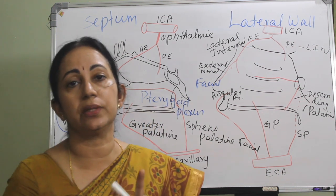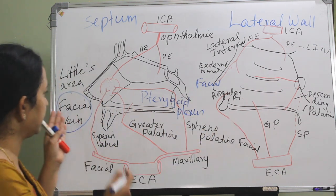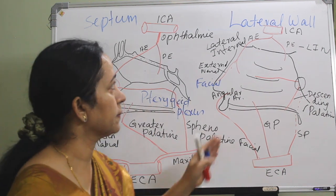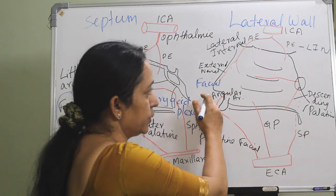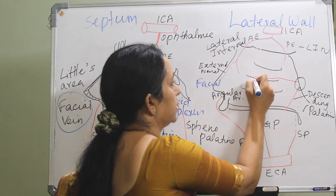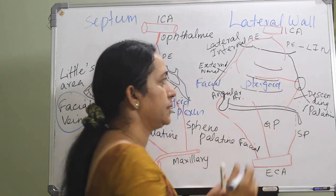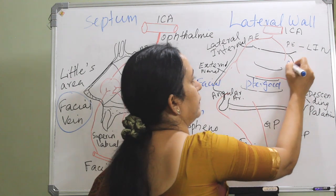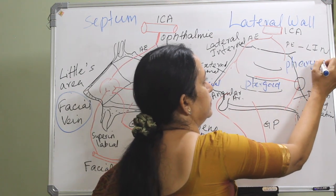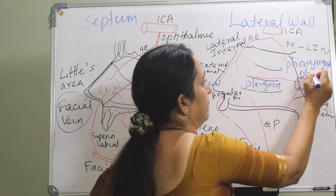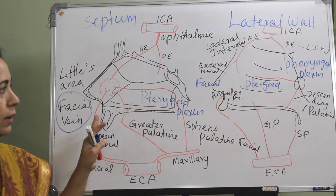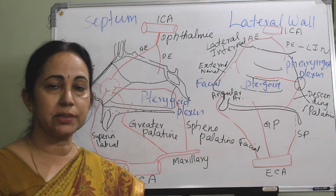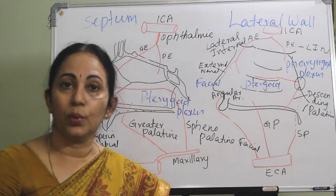That is another difference between the venous drainage of the septum and the lateral wall. In the septum there are only two systems — anteriorly to the facial vein and posteriorly into the pterygoid plexus. But in the lateral wall, anteriorly it is again into the facial, the middle part is into the pterygoid, and posteriorly into the pharyngeal plexus. So this is the arterial and venous drainage of the septum and the lateral wall — with this knowledge it will be easy to learn more about epistaxis.